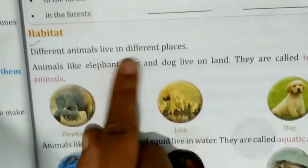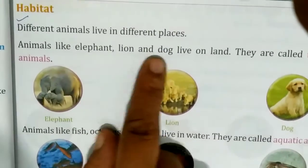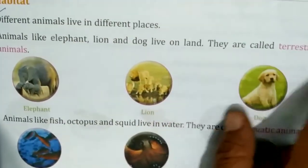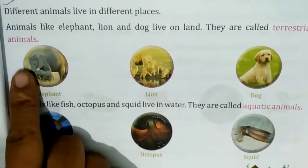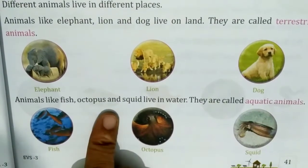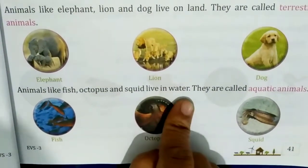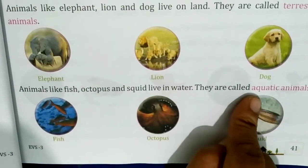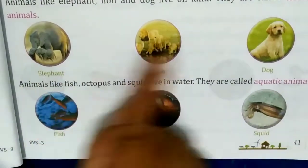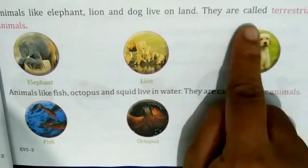Habitat. Different animals live in different places. Animals like elephant, lion and dog live on the land. They are called terrestrial animals. Animals like fish, octopus and squid live in water. They are called aquatic animals.